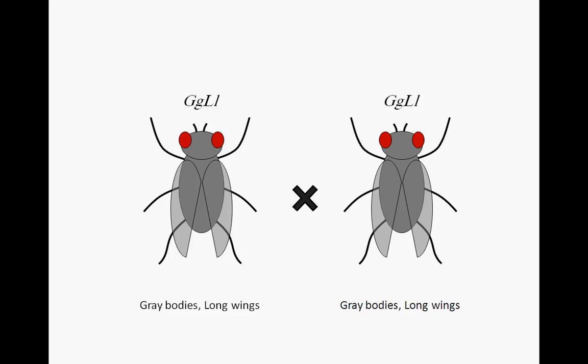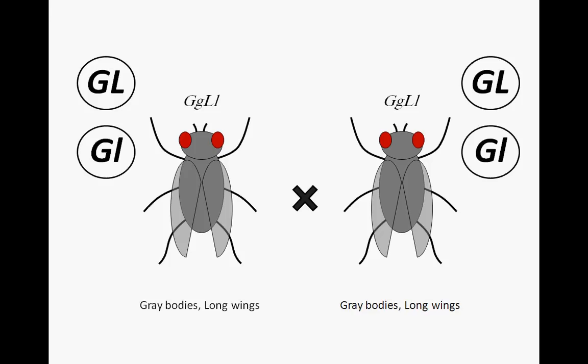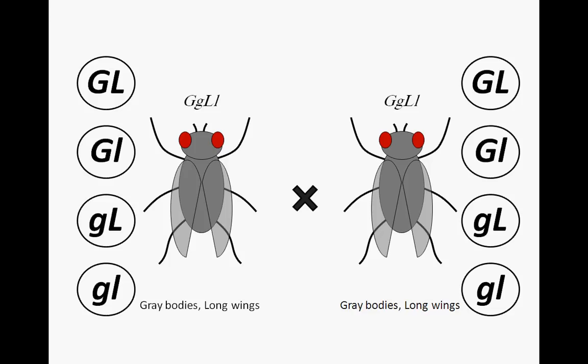Take a moment now and identify the possible gametes. Hopefully you identified the following four possibilities: big G, big L; big G, little L; little G, big L; and little G, little L. These gametes represent every possible combination of the G's and L's present in the parental cells.